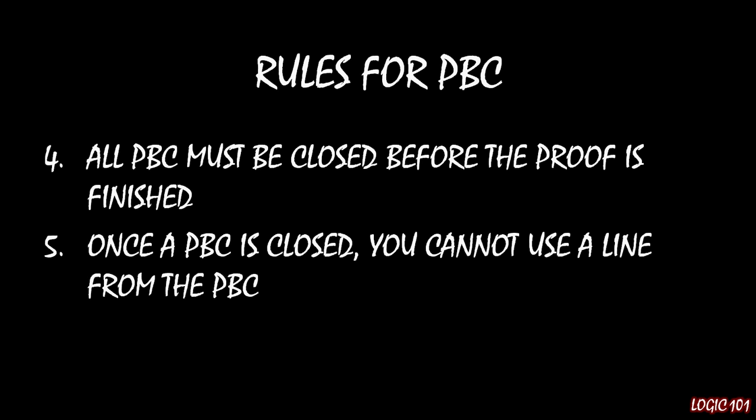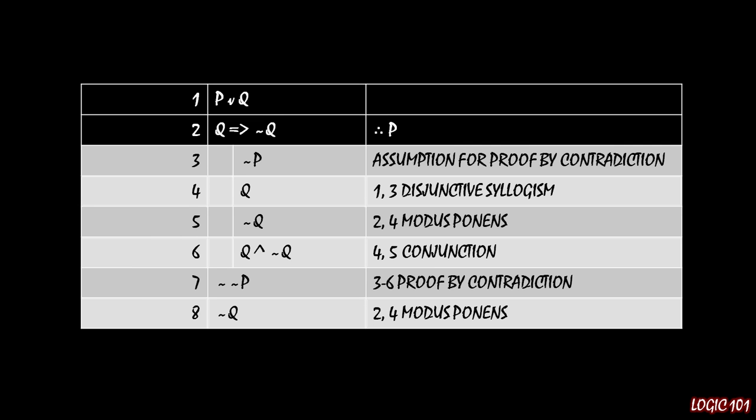Once you've closed off the proof by contradiction, you can't use any line from within it. For example, even if you wanted to show NOT Q is true, you can't use Q on line four to get to NOT Q through modus ponens. The reason is that Q was only derived as a result of assuming NOT P is true. Once you've closed the proof by contradiction, everything assumed and derived within it — we just don't know whether it's true or not anymore. The only thing we know is true is the negation of the first line of the proof by contradiction.